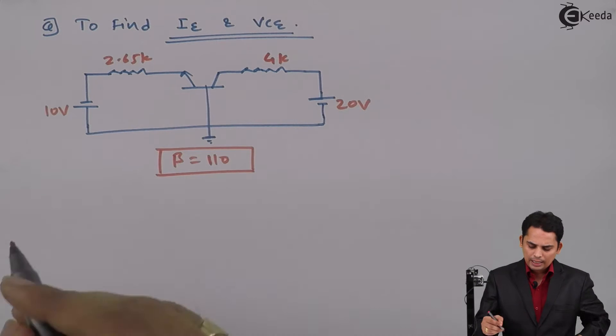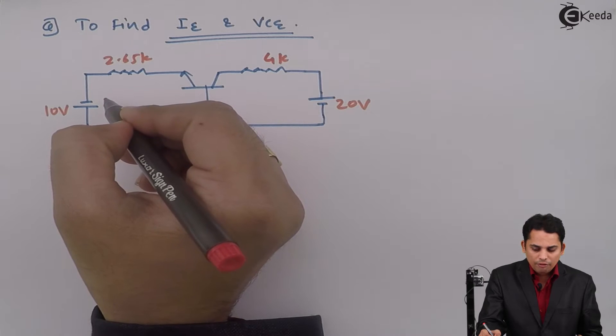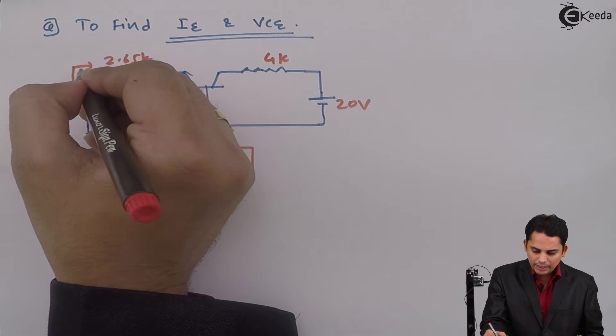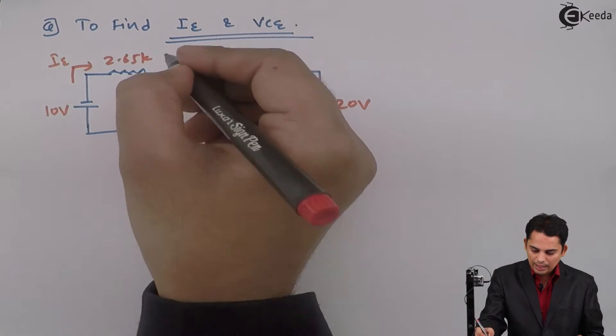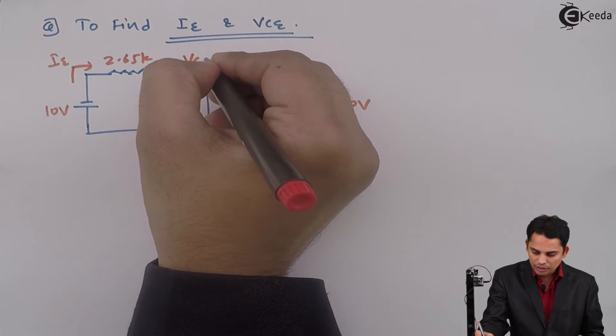We know that this side or this loop will give me emitter current IE and this voltage between collector to emitter is VCE.